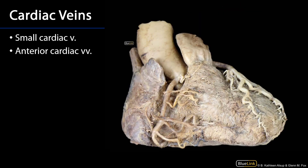There is also a small cardiac vein. The small cardiac vein is typically associated with the right marginal branch of the RCA, and that small cardiac vein moves along the inferior border of the heart into the coronary sulcus where it meets up with the coronary sinus.